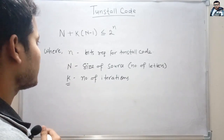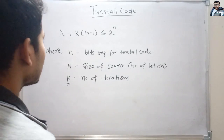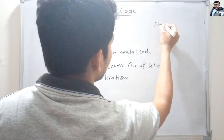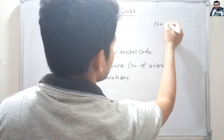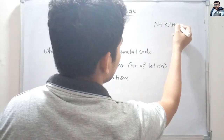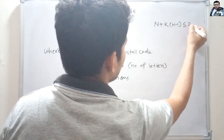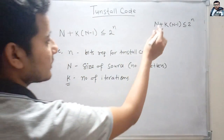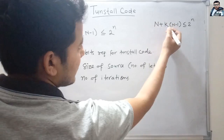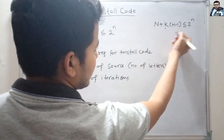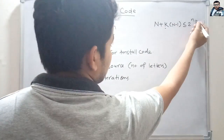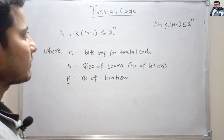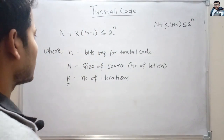So: n plus k times (n minus 1) is less than or equal to 2 to the power n. Remember that n is the size of the source — that is, how many alphabets are present — k is the number of iterations, and n is also the number of bits required for the Tunstall code.